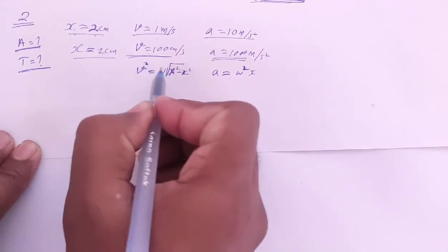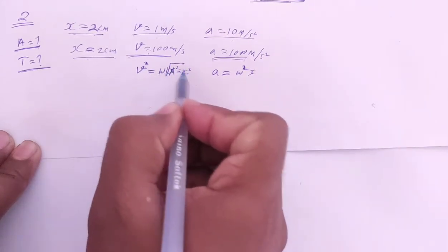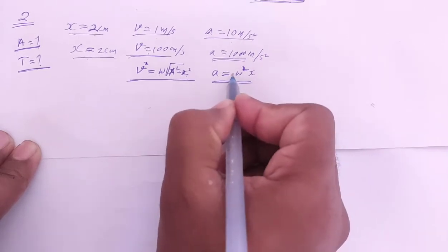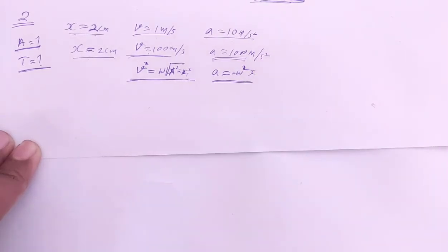The velocity formula is v² = ω²(A² - x²). This is the velocity formula. And acceleration is equal to minus ω²x.